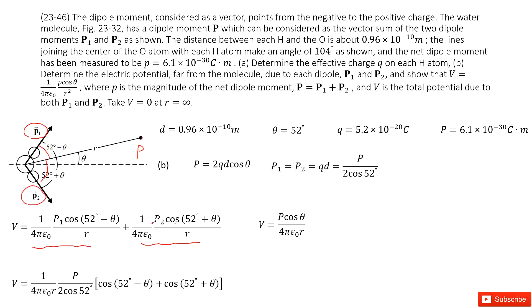Now we need to simplify it. We can see p1, p2 as we talked about is q times d. And then this is a function we just got previously. So the qd can be replaced as p over 2 times cosine 52 degrees.